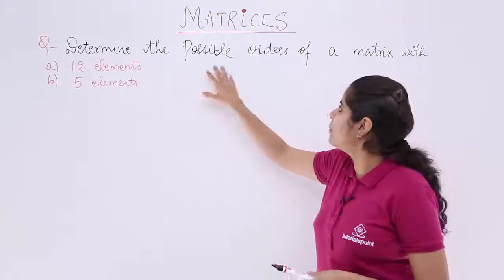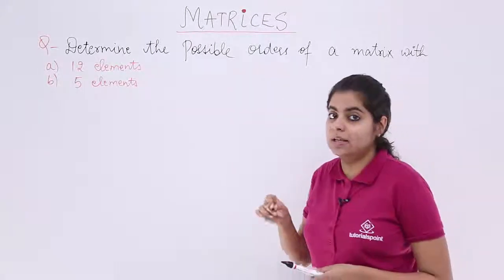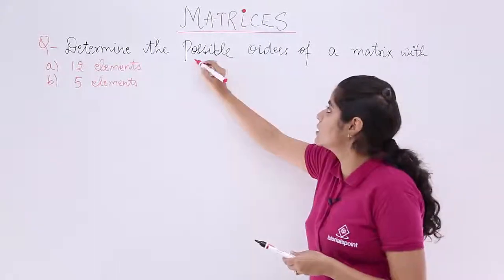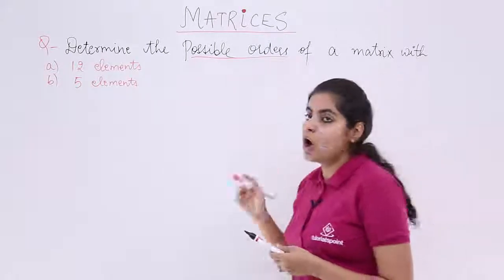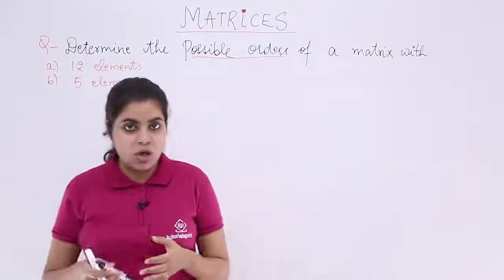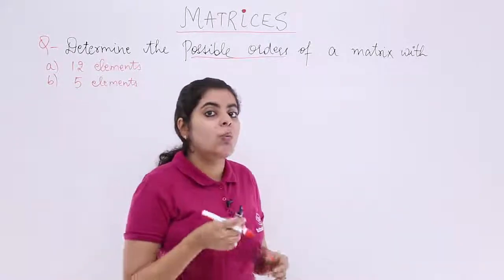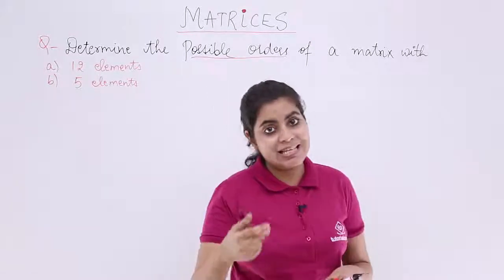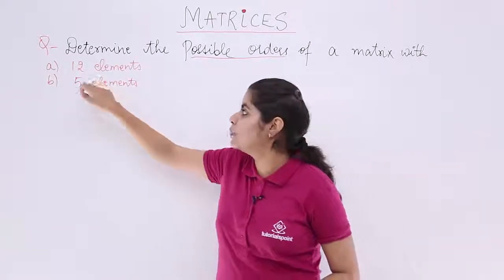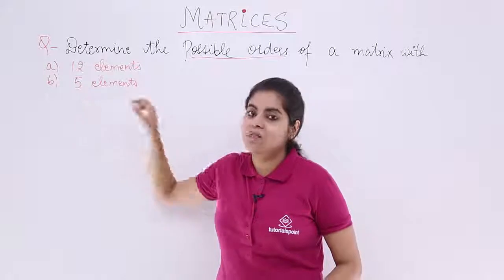The question says: determine the possible orders of a matrix with the number of elements given as - in the first part, I have 12 elements. In the second part, I have 5 elements.